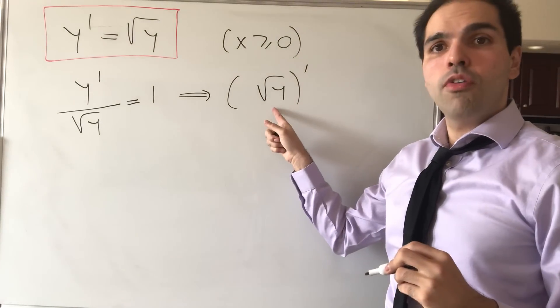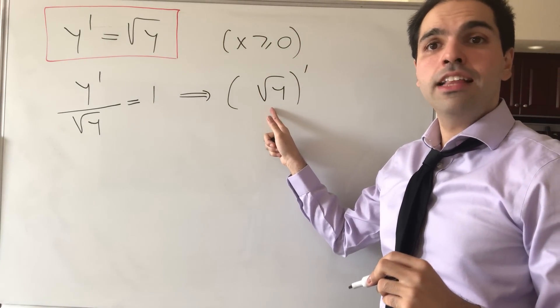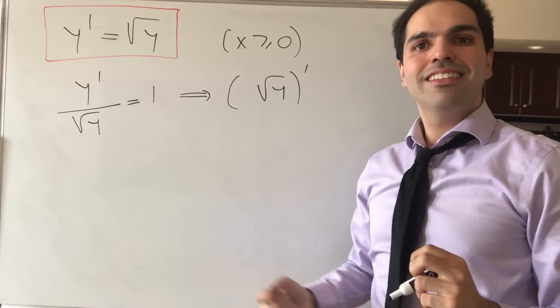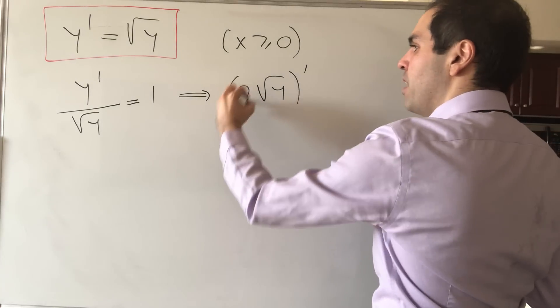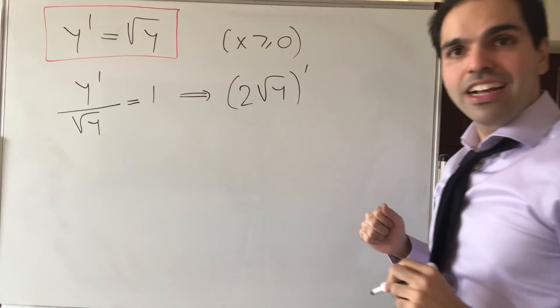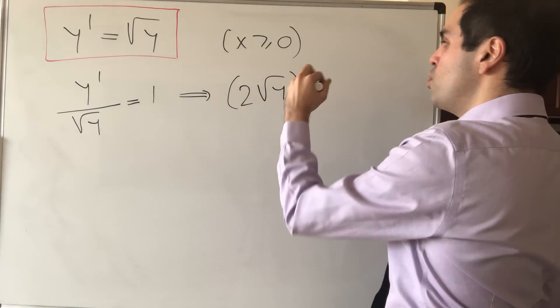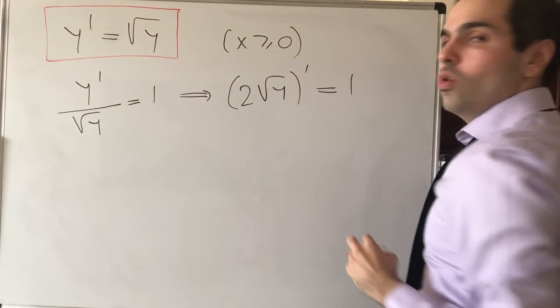But the only problem is, if you keep it like that, you get y prime over 2 square root of y. So to get rid of this 2, you just multiply this by 2. And you can check that this works. So 2 square root of y prime equals 1.